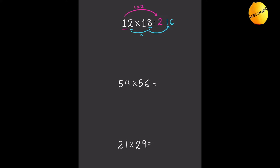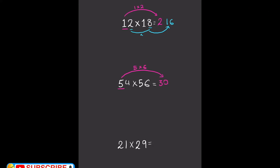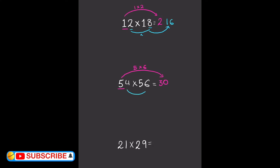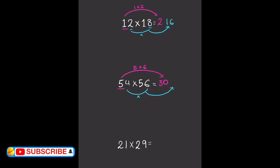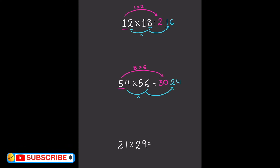Now let's do 54 times 56. We do the same thing — we multiply the tens place, which is 5, by its next highest number, which is 6. So 5 times 6 is 30. Then we multiply the units digits: 6 times 4 is 24, and we write that 24 there. So the answer is 3024.